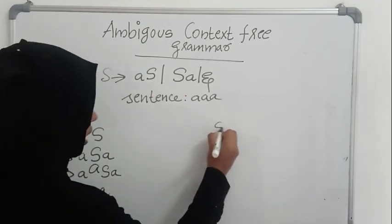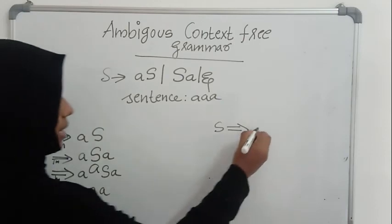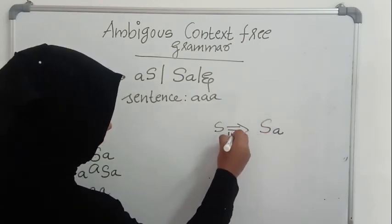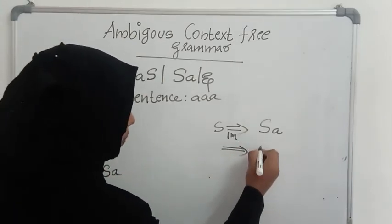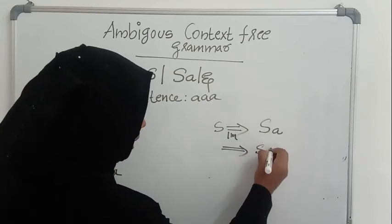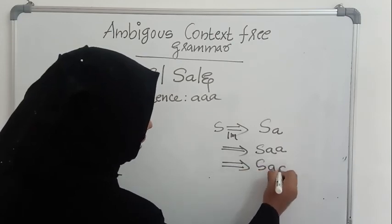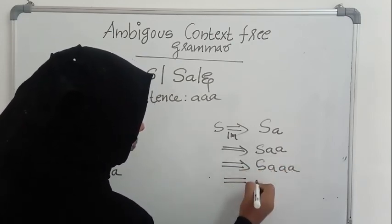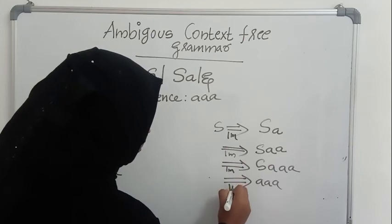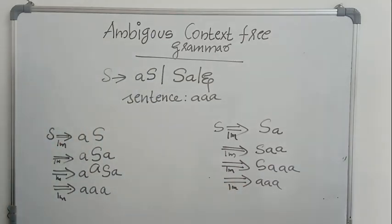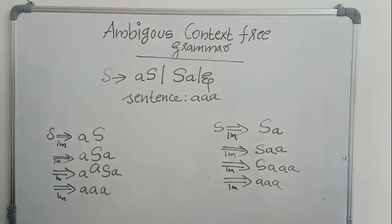Now I am trying whether I can derive the same thing using another leftmost derivation. So I am starting with Sa instead of aS, so that in the beginning itself the leftmost derivation is a different word. Now I am replacing this S with Sa again, giving Saa. Now I am replacing this S with Sa again, giving Saaa. Now I am replacing this S with epsilon, so I will get aaa. This is a leftmost derivation, and this is also a leftmost derivation. So again I got two different leftmost derivations for the same string for this grammar. So this grammar again is ambiguous.